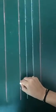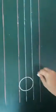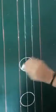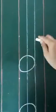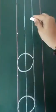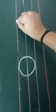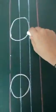Now let's start — how to write letter O on a board. Look at here. Circle, this is letter O. Make circle, this is letter O. Make circle, this is letter O.